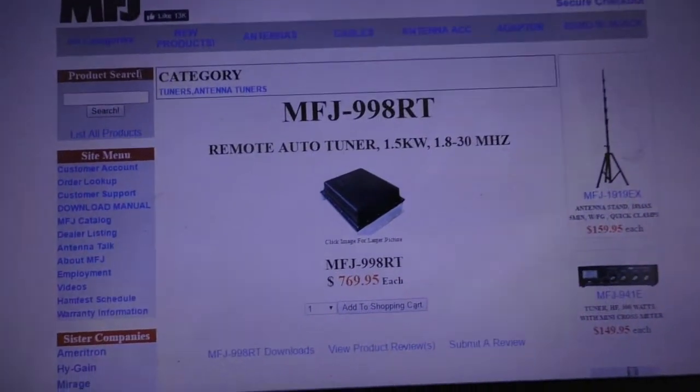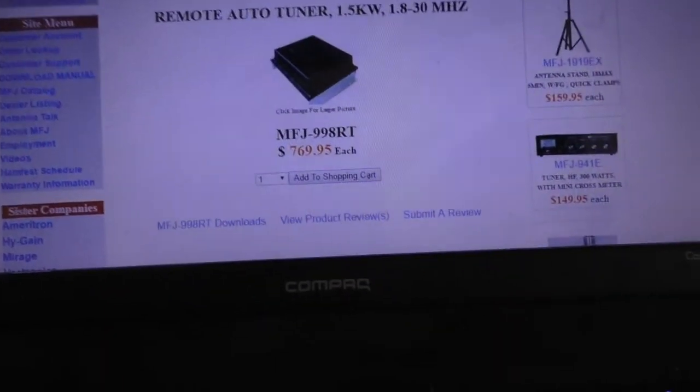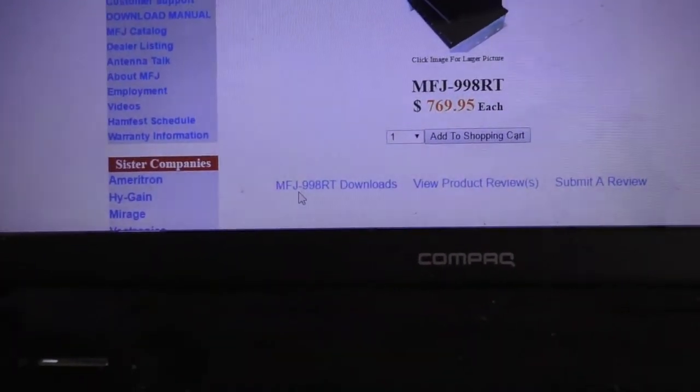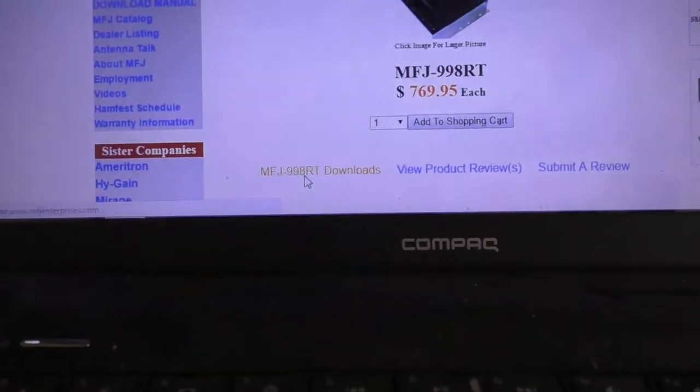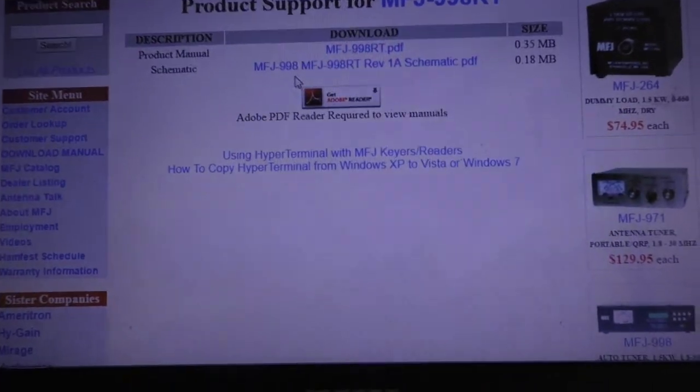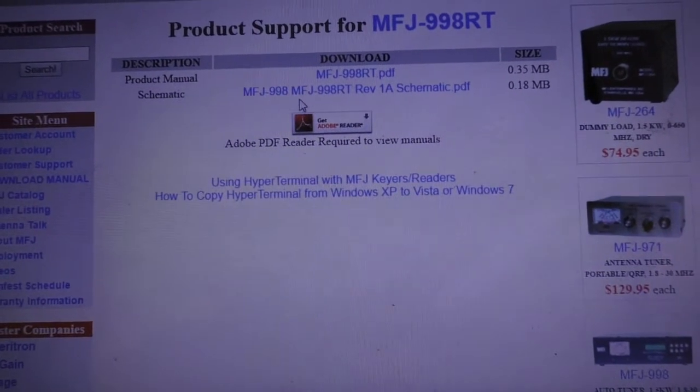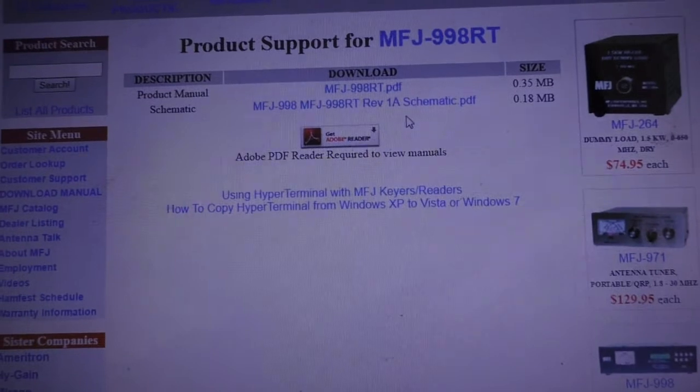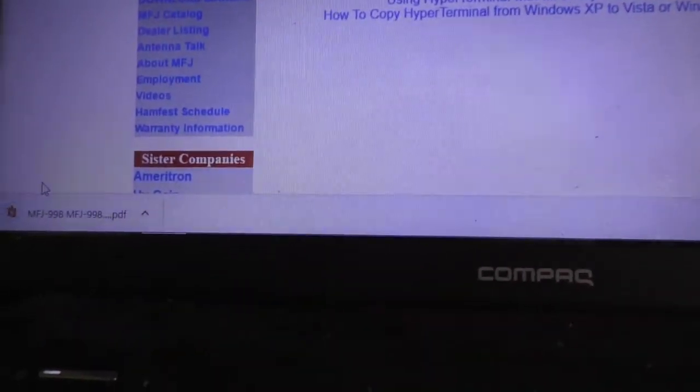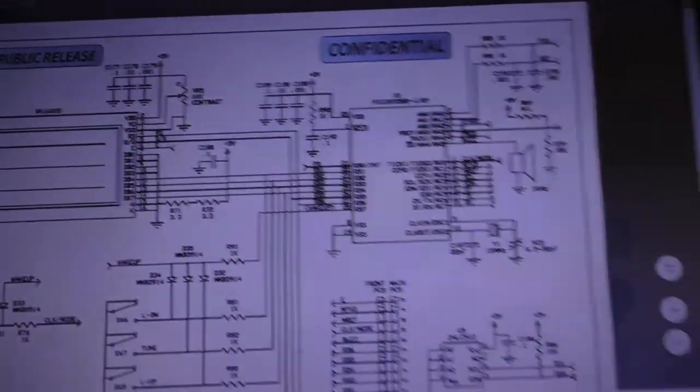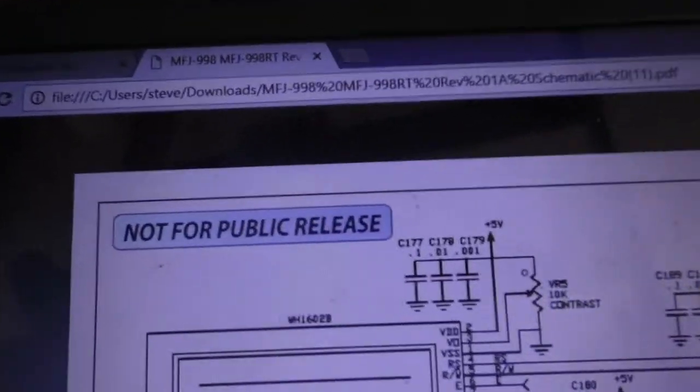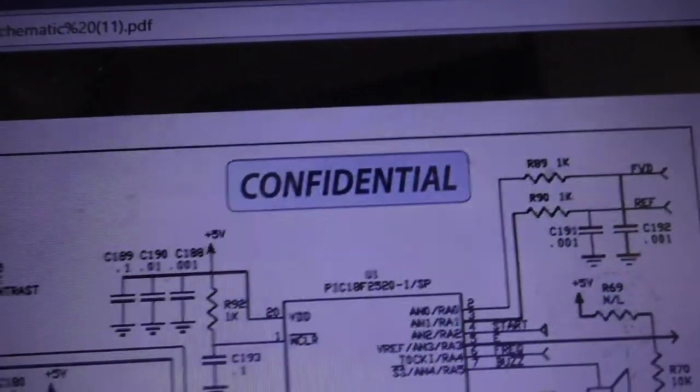So I looked at the circuit the other day and I thought this is not the circuit diagram of the 998RT. I'll show you what I mean. Now if I go to downloads, MFJ 998RT downloads. There's a PDF which is the manual, it says MFJ 998 and MFJ 998RT rev 1a schematic. Let's click on that and have a quick look at the schematic. Here's the schematic, and it says here 'not for public release, confidential.' I wonder if there's a representative from MFJ lurking.